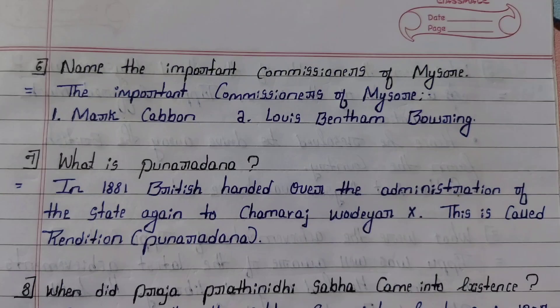Sixth question: Name the important commissioners of Mysore. Answer: The important commissioners of Mysore were, first, Mark Cubbon, and second, Lovice Bentham Bowering. Seventh question: What is Punaradana? Answer: In 1881, the British handed over the administration of the state again to Chamaraj Odayar. This is called Punaradana.